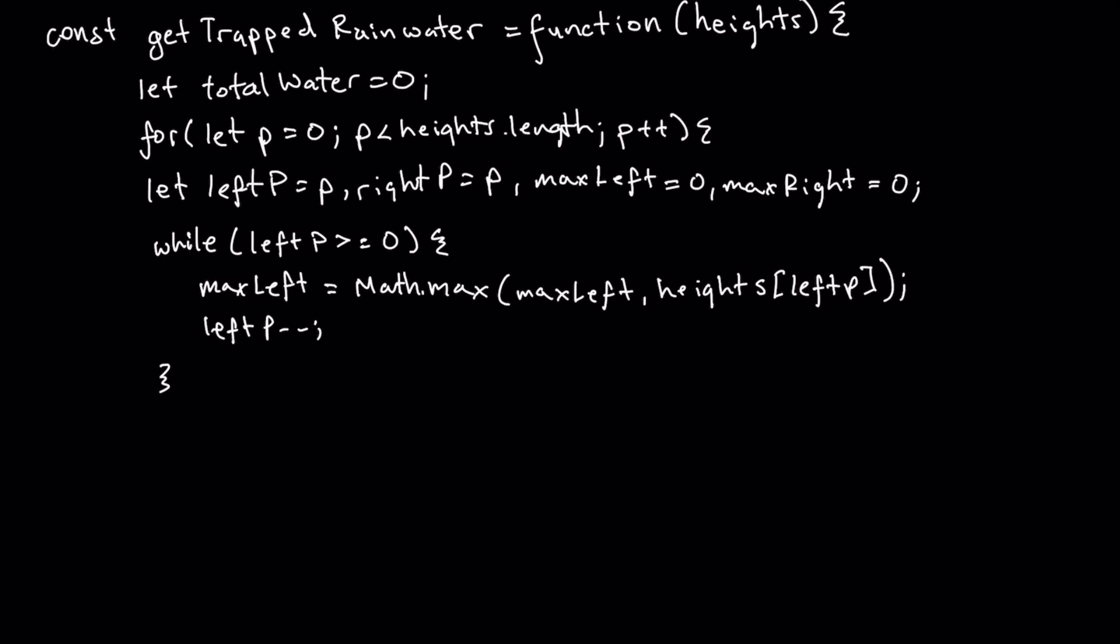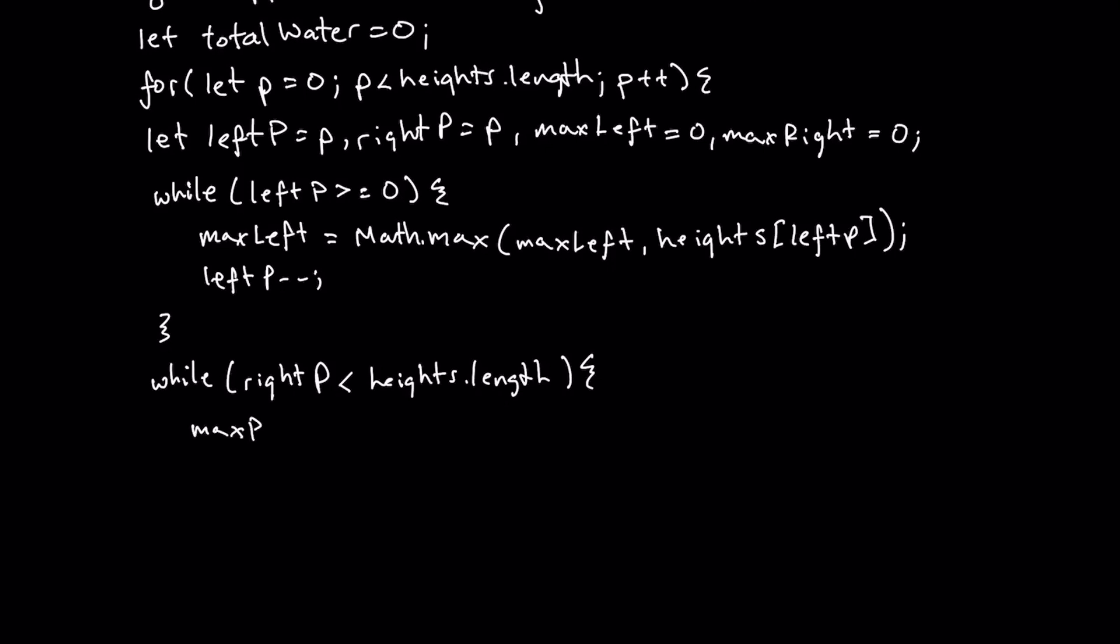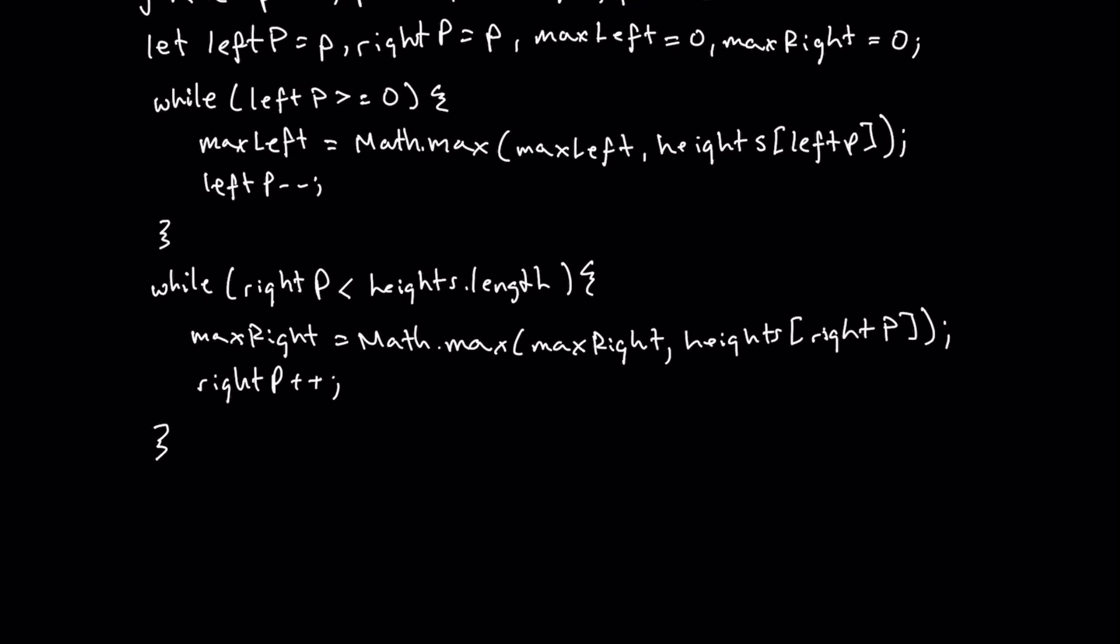Now what we're going to do is we are going to rewrite this but for our right side. And here we're going to say while our right P is less than heights dot length then we're going to do the same thing. We're going to say max right is equal to math dot max of max right and then our heights at right P. And right is now going to increment instead of decrement. So it's important to remember that because it's easy to just be copying your code over word for word and you'll notice that you'll get an error. So just remember left P decrements because it's going to the left. Right P increments because it's going to the right.